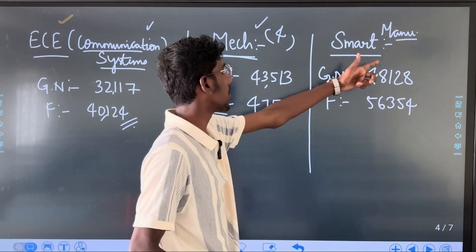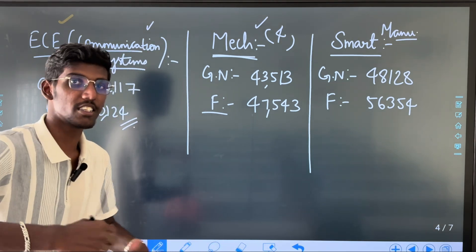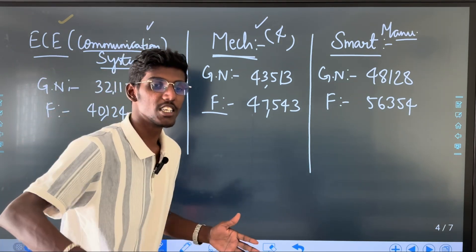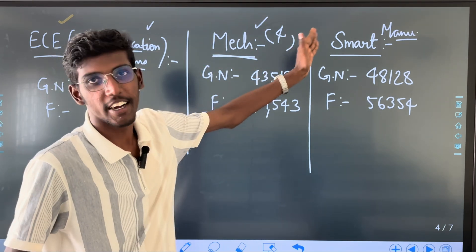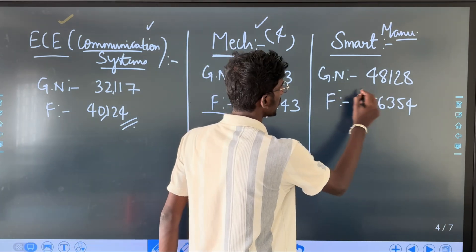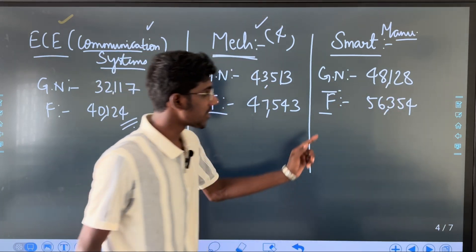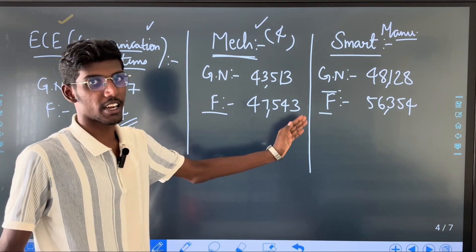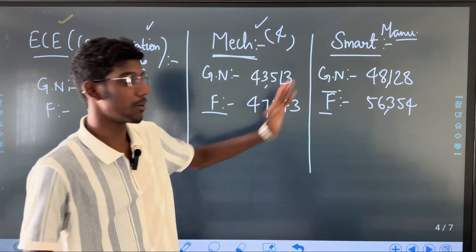Next, Smart Manufacturing. If you look at this, Mechanical Engineering related course, like CS with AI. Mechanical is kind of a major smart manufacturing - that is Mechanical related. This is gender neutral 48,128, Female category 56,354. This is the number, clear cut. Make sure you have a decision in Mechanical.